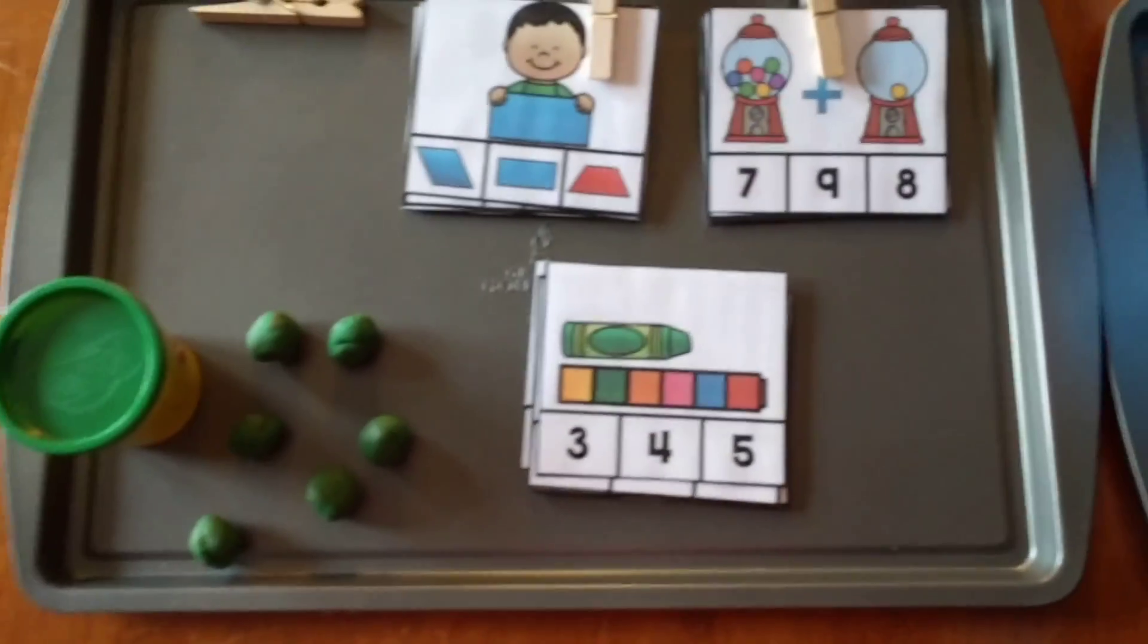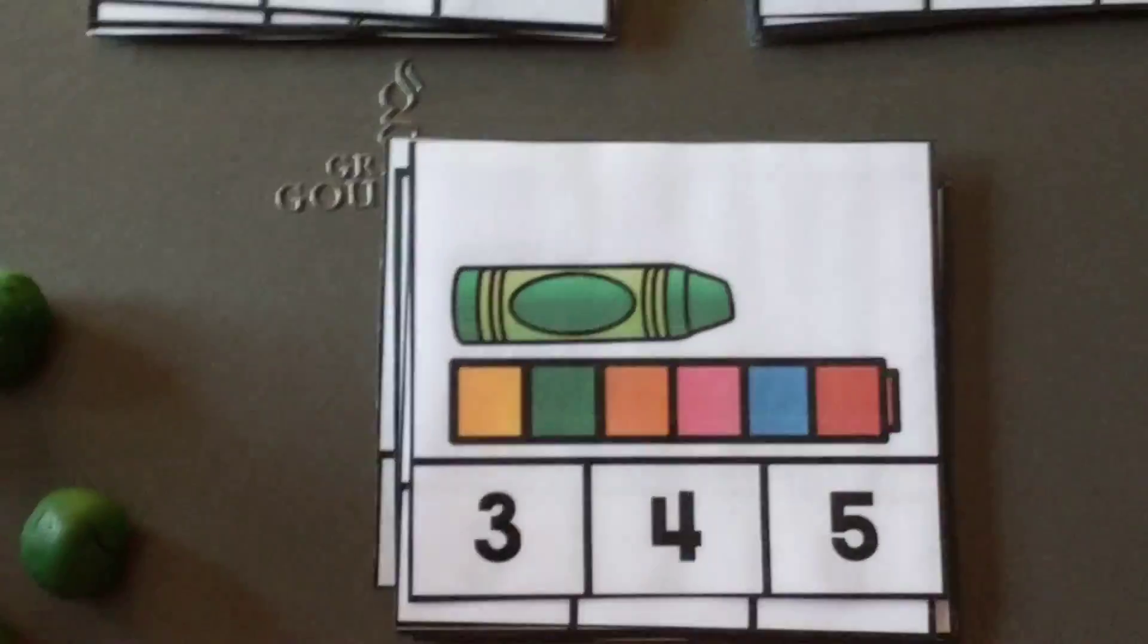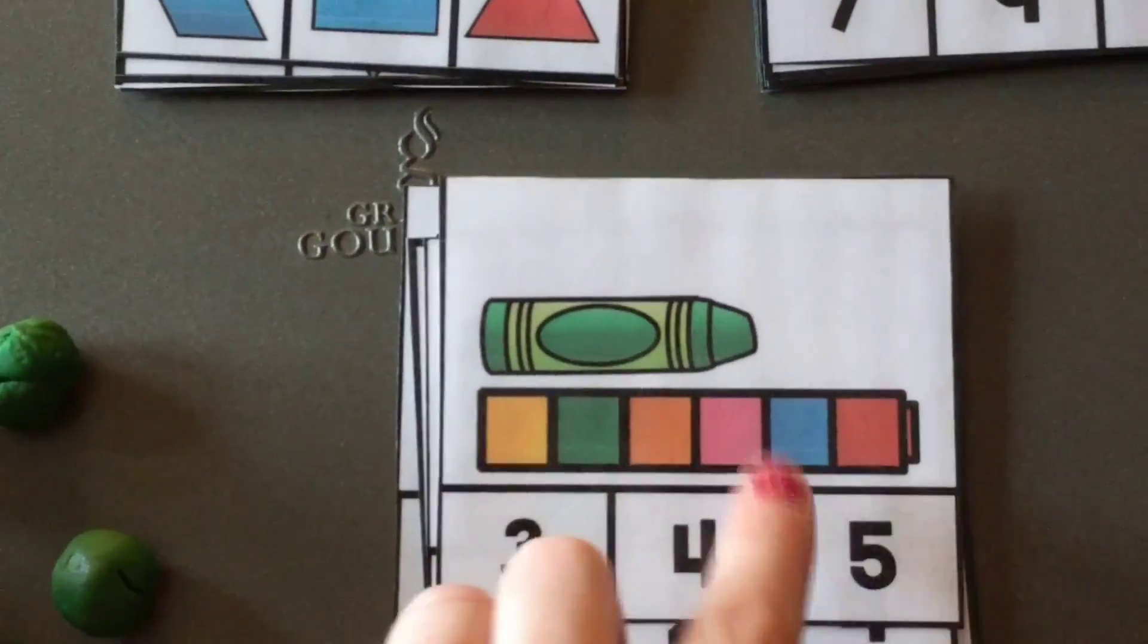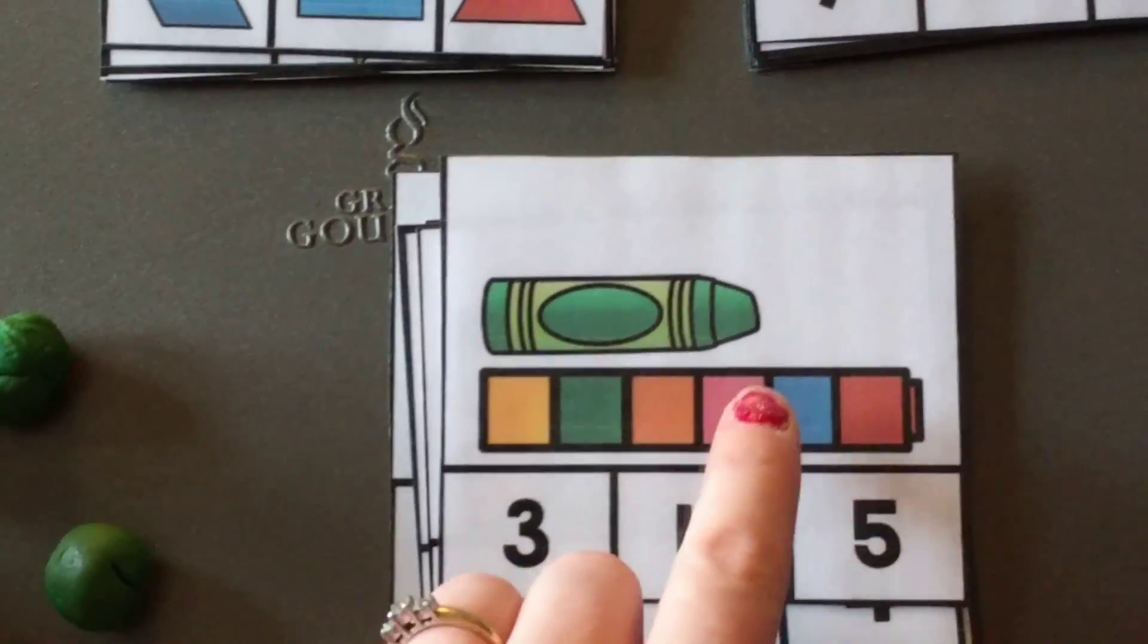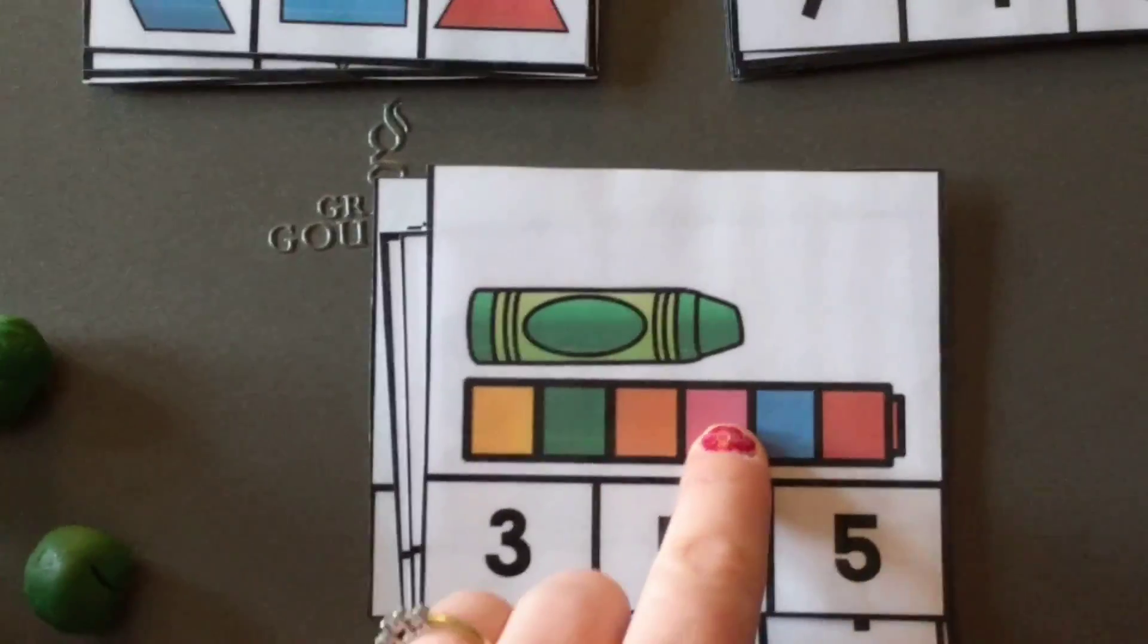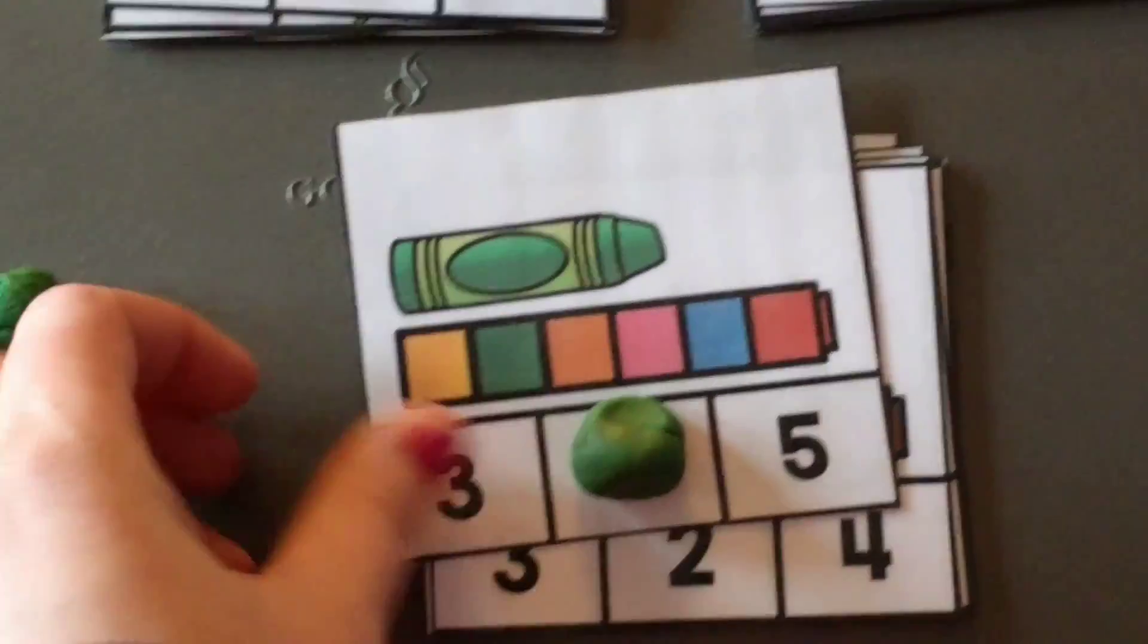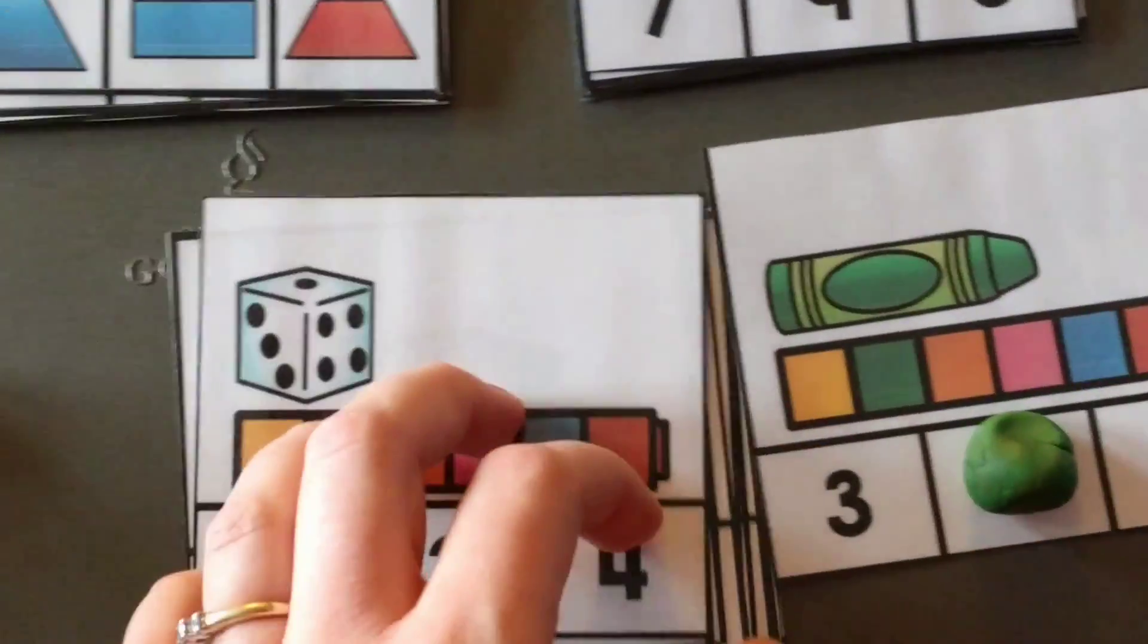So for the measurement cards, he's just basically going to look at the card and count how long it is. So it's one, two, three, four blocks long. So he's going to take his Play-Doh ball, and he will put it on the four. Then we will do the next card.